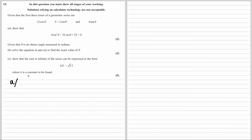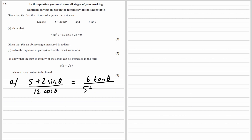So (5 plus 2 sine theta) divided by 12 cos theta must be equal to 6 tan theta over (5 plus 2 sine theta).